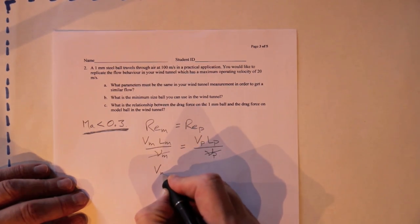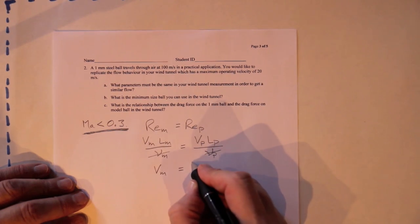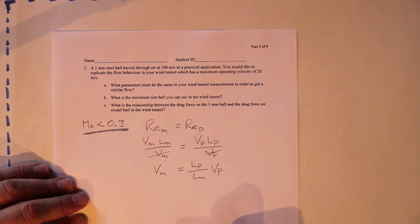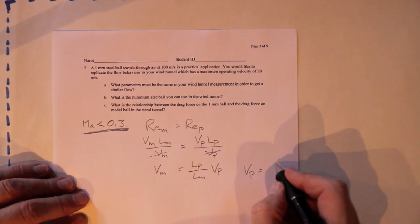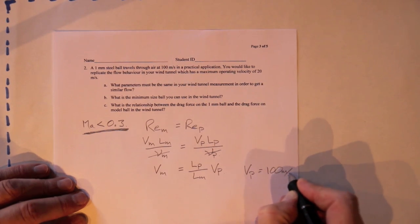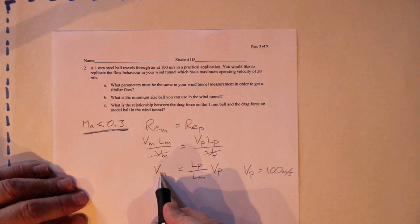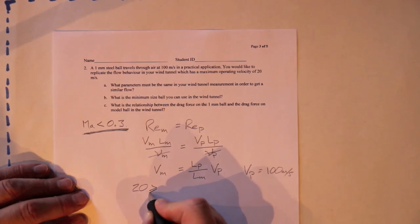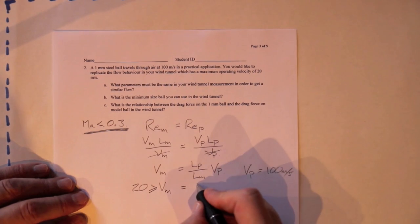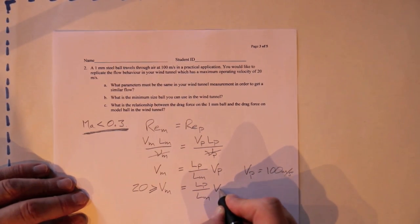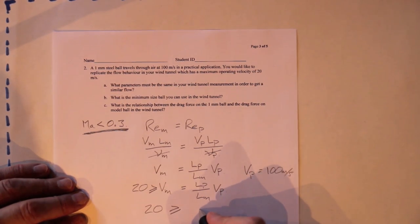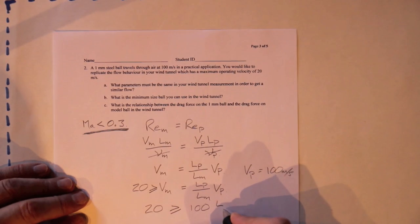That tells me that the model velocity must be equal to the length of the prototype divided by the length of the model times the prototype velocity. Vp is 100 meters per second, and V_model is a maximum of 20 meters per second. So V_model has to be less than or equal to 20 meters per second, which has to equal Lp over Lm times Vp.